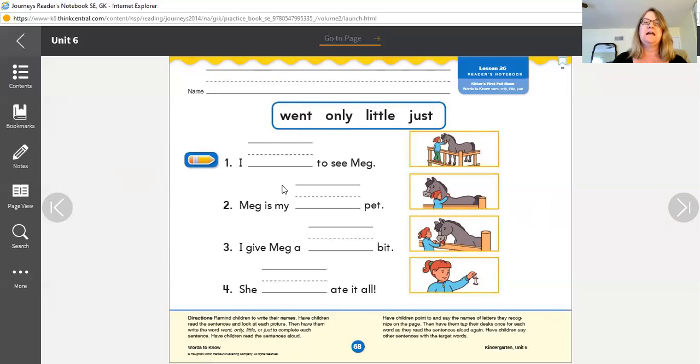And when you write them on the line, remember, except for the letter L, all these words will start on the dotted line. So your L here will go from the top to the bottom. And that's the other thing.